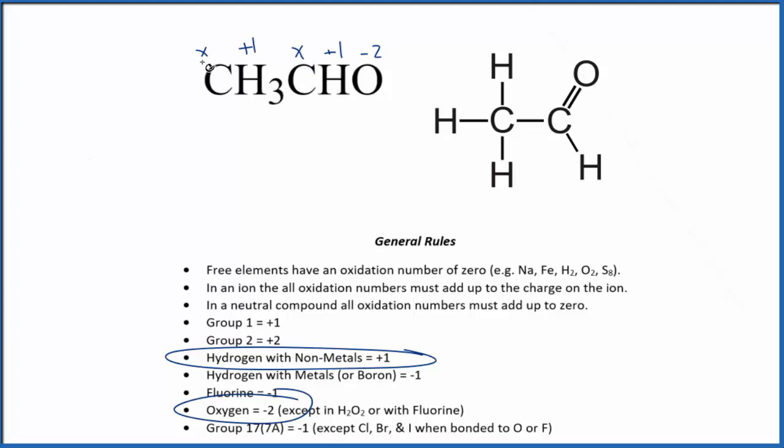So we could just set an equation up. We have 2x plus we have three times plus one. That's plus three, and then we have another hydrogen. So plus four, and then minus two equals zero.